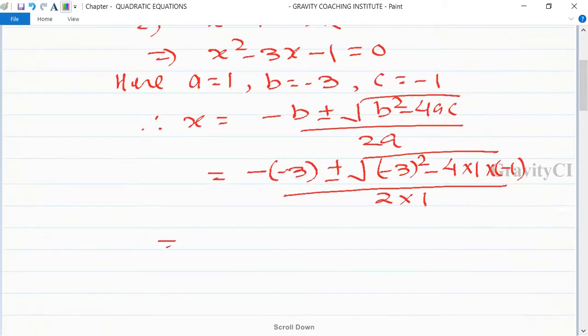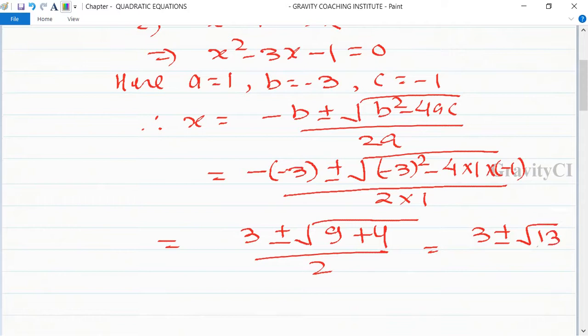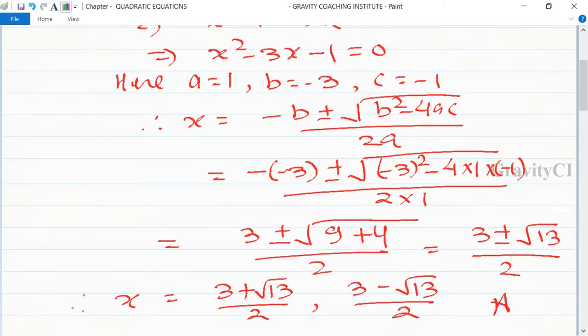This equals 3 plus minus root under 9 plus 4 upon 2, which equals 3 plus minus root 13 upon 2. Therefore x is equal to 3 plus root 13 upon 2, comma 3 minus root 13 upon 2, which is the required value of x.